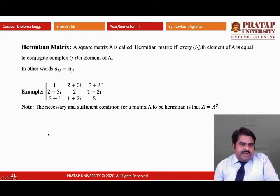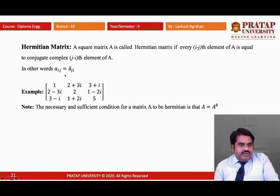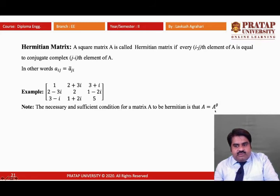Now, the Hermitian matrix. A square matrix A is called a Hermitian matrix if every (i,j)th element of A equals the complex conjugate of the (j,i)th element — mathematically, Aij = Āji. An example is given to check. The necessary and sufficient condition for A to be Hermitian is that A equals its Aθ matrix.